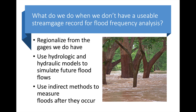Finally, we can use indirect methods — things like looking at mud marks on trees or where debris has gotten lodged in houses to measure flood height after it occurs, then use Manning's equation to look at the slope of the water surface, the area in which the flood occurred, and the roughness of the streambed and floodplain, and make an estimate of the peak flow after the flood has occurred. All of that is a topic for future videos and coursework. Thanks for listening.